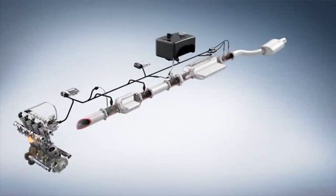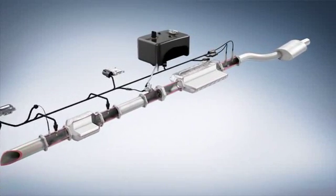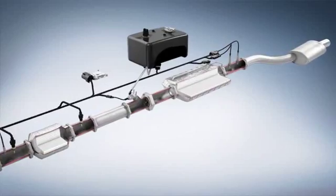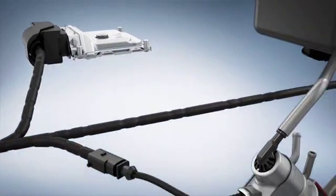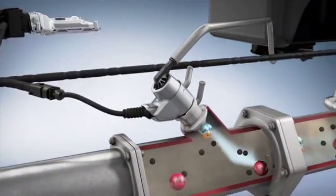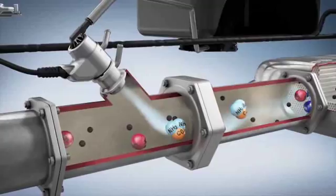In connection with the SCR catalytic converter and the Denoxtronic system from Bosch, the nitrogen oxides are transformed into harmless substances. The Denoxtronic does this using a metering unit to dose AdBlue, a urea water solution, right into the exhaust gas stream before the SCR catalytic converter.